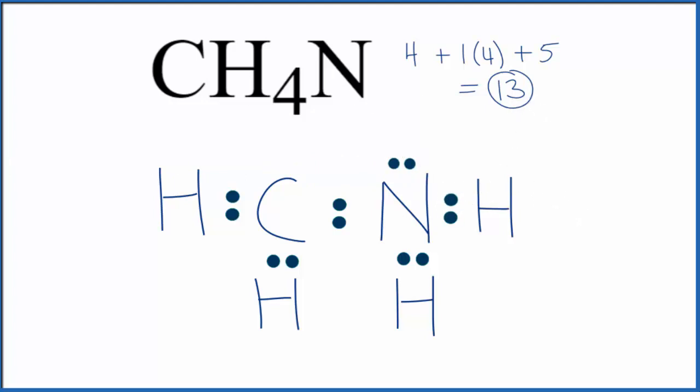We have 13. We only have one left. And really, our only choice here is to put that on the carbon. And that would make this the Lewis structure for CH4N.